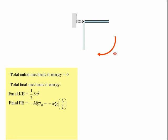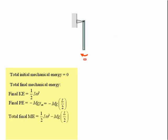The total final mechanical energy is therefore equal to ½Iω² minus MgL/2. By the conservation of mechanical energy, the total final mechanical energy must be equal to the total initial mechanical energy. Therefore, ½Iω² minus MgL/2 is equal to zero.